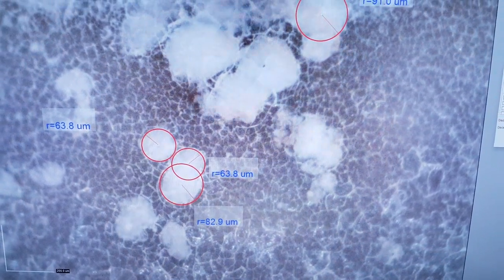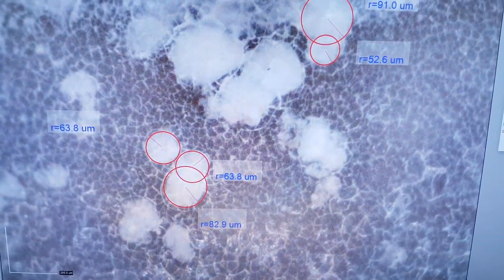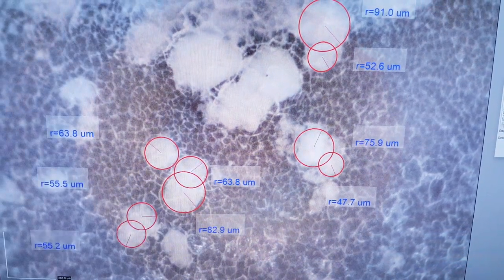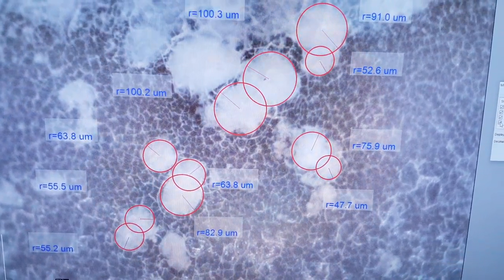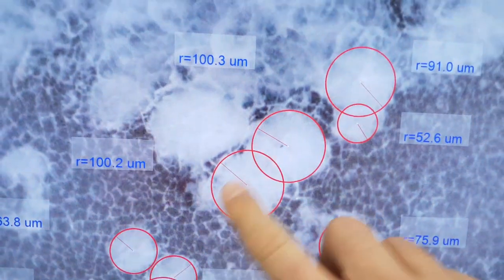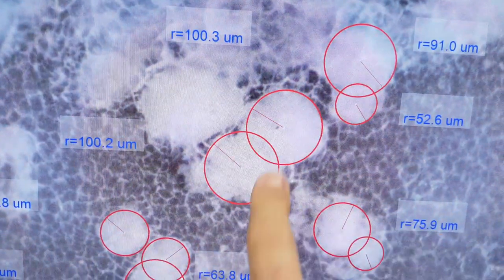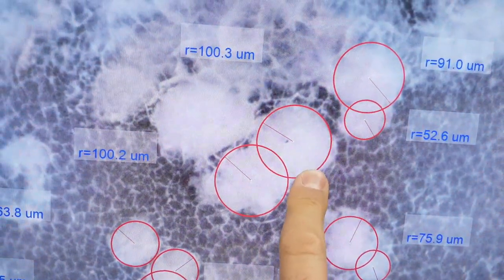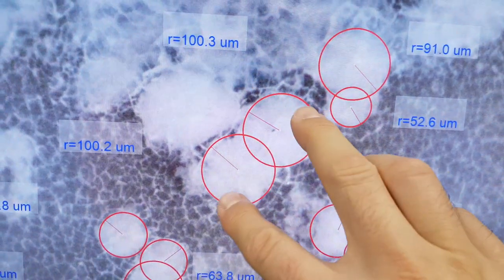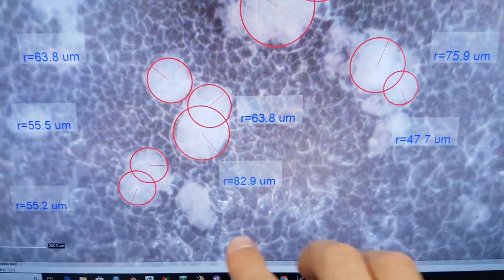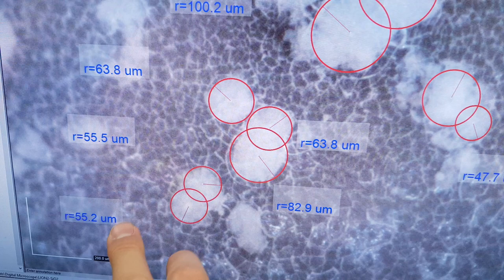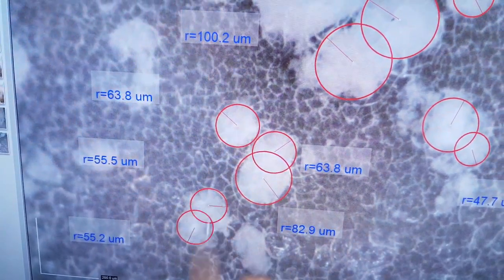So I'll just pull these measurements in. For instance, these two spots are approximately 100 microns radius, 200 microns, and right next to each other. Similar sort of thing down here. We've got a 55.2, 55.5 here.